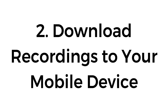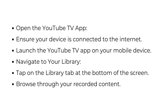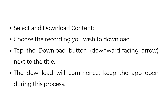Number two, download recordings for your mobile device. Ensure your device is connected to the internet and launch the YouTube TV app on your mobile device. Tap on the Library tab at the bottom of the screen and browse through your recorded content. Choose the recording you wish to download and tap the download button — usually a downward-facing arrow next to the title. The download will commence; keep the app open during this process.